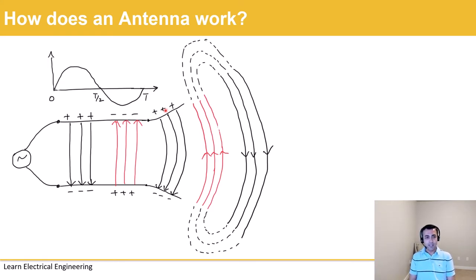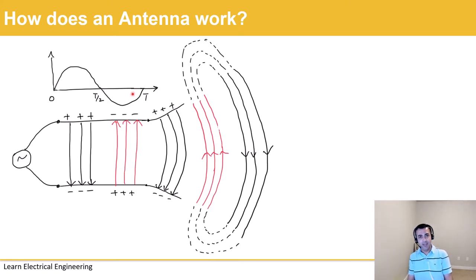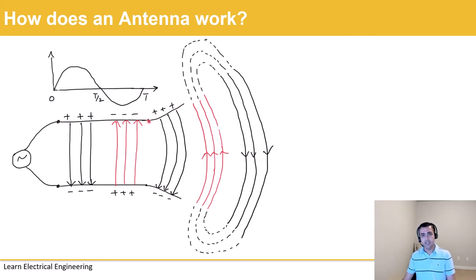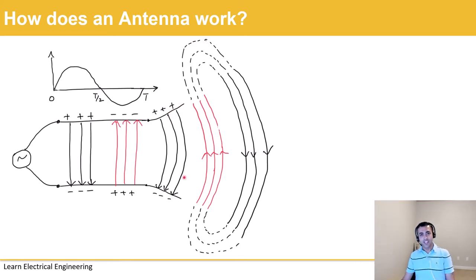The electric field in this case is varying across time because the applied signal is varying. So we have a varying electric field and a varying magnetic field, and that generates an electromagnetic wave which at some point enters from a transmission line into an antenna. In this picture let's assume this is our transmission line and this is the antenna structure. After entering the antenna, the electric lines of force still exist there and at some point they radiate into the free space.